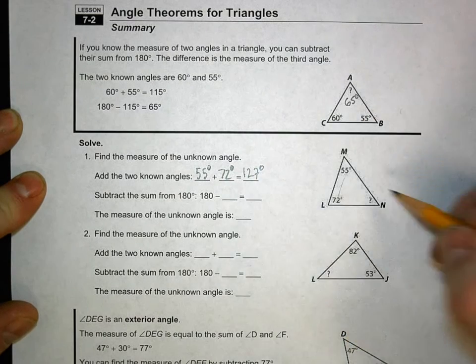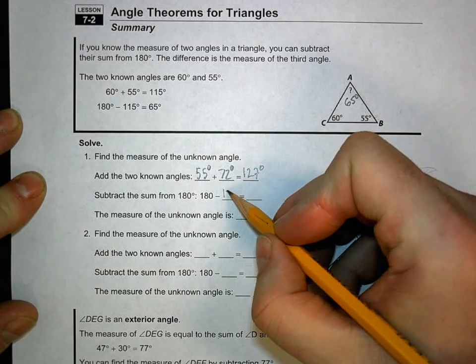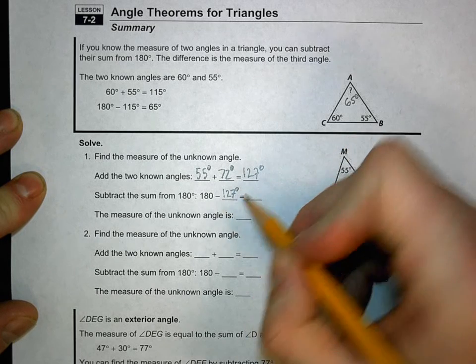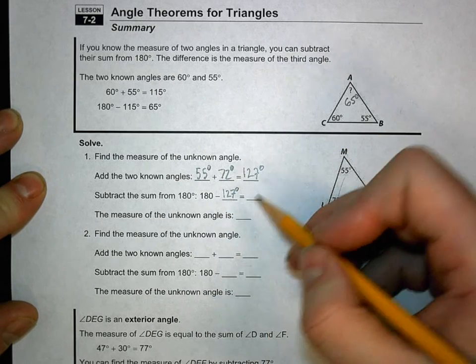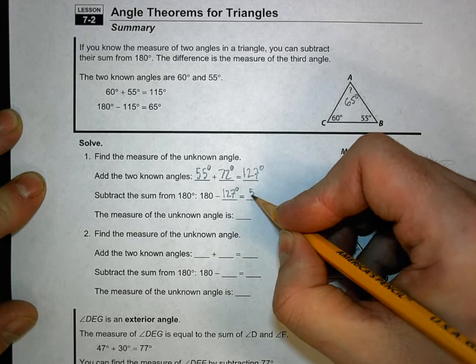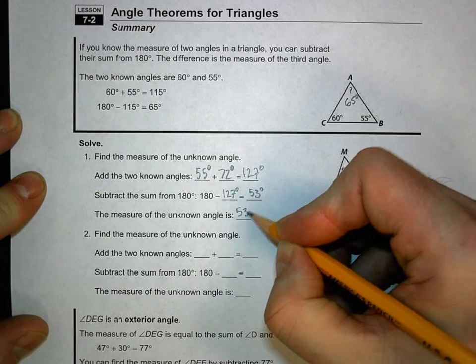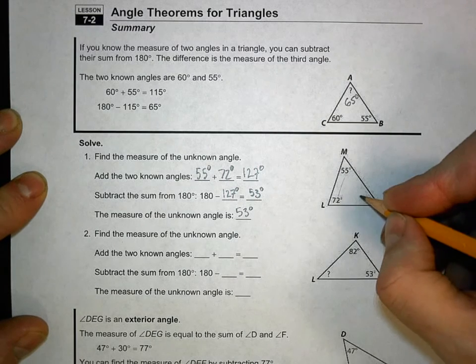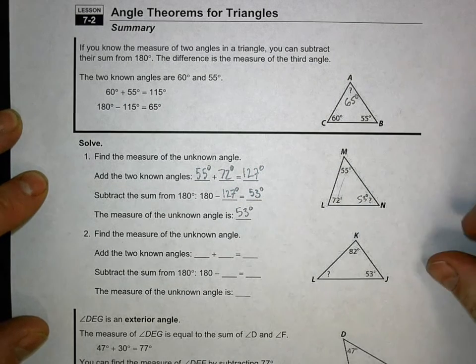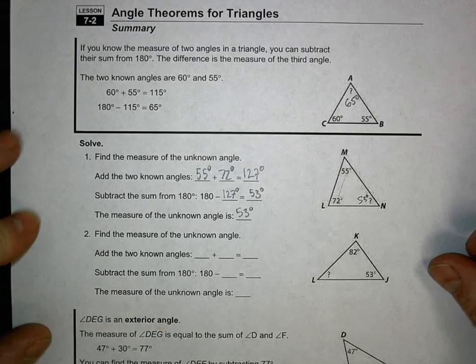We subtract that 127 degrees from 180. So 180 minus 127 is 53 degrees. So the measure of the unknown angle is 53 degrees. Yay, 53 degrees. I'm going to put it over here because I like labeling things. It just seems like fun.